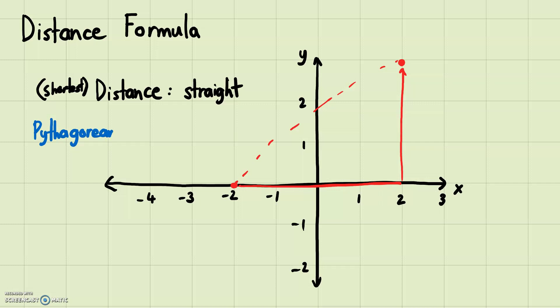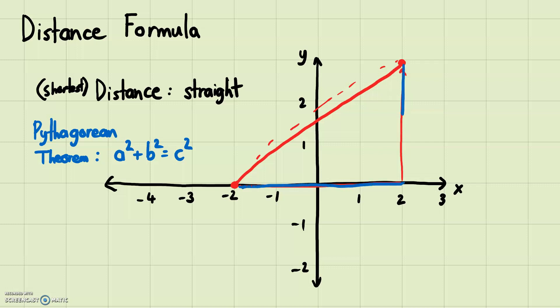The way you can find the shortest distance is by using the Pythagorean theorem. The Pythagorean theorem states: a squared plus b squared equals c squared. I've drawn a right triangle here, and you can do this between any two points — if you're trying to find the distance between two points, you can always draw a right triangle like this.